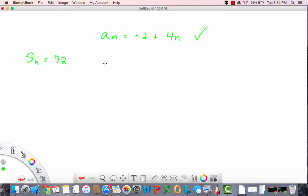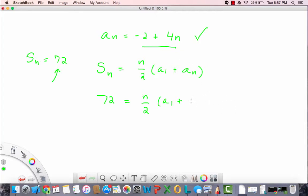So the way we do that is by writing the equation for S sub n, which is n over 2 times the quantity a sub 1 plus a sub n. By substitution, since S sub n is 72, we can sub that into the left side of the equation. We don't know n, so we leave that as a variable. We need a sub 1 plus a sub n. We don't know a sub n, but we know the equation for it. So let's sub that in by replacing a sub n with the expression that it's equivalent to: negative 2 plus 4n.